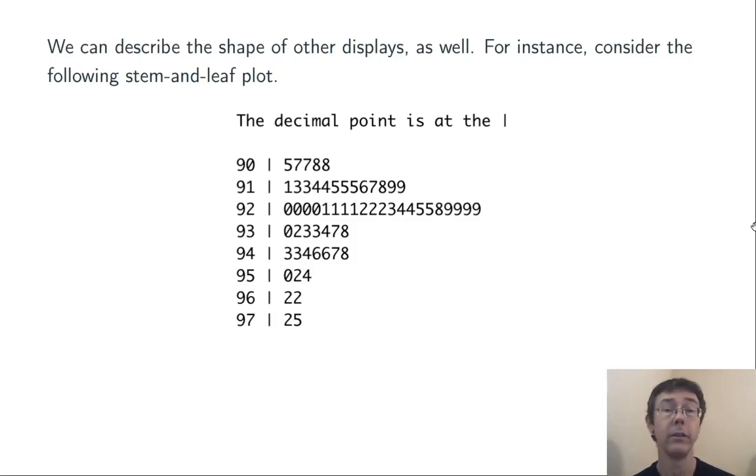The next thing we want to look at is a data set that is not symmetric. Just for variety's sake, let's look at some stem plots rather than histograms. First of all, we see there's a lack of symmetry here. It does not look the same to the left and to the right of that center, which lies around 92 or so.